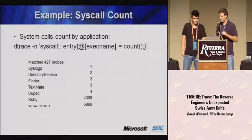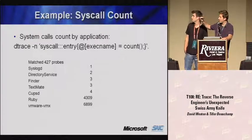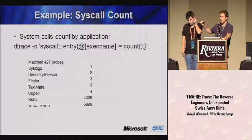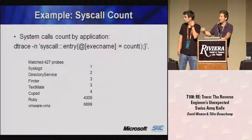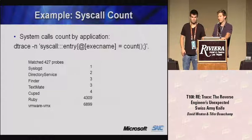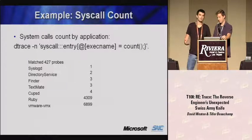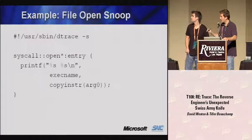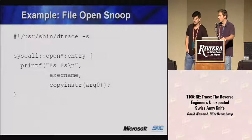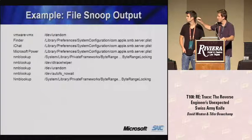Here's a one-line DTrace script. You've got the probe definition and the action. It traces every application across the system, recording the number of times each application makes a system call. The output shows syslog made one system call, CUPSD made four, and VMware made almost 7,000. Another example hooks every open syscall at the entry point and prints the executable name and the first parameter — the file being opened. Output shows Finder opening a plist file, VMware opening /dev/urandom, and so on. You can use predicates to zoom in on a particular area without having access to source code.